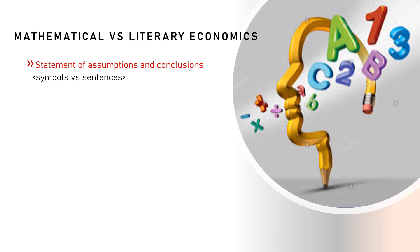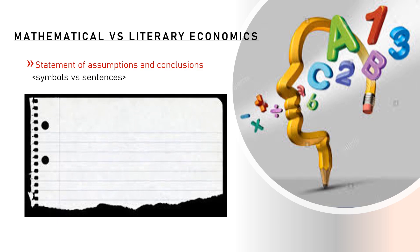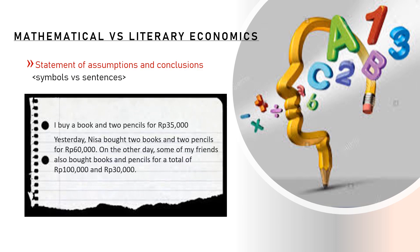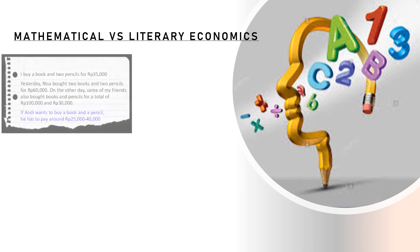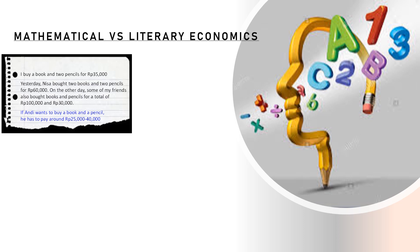Well, they differ in the three keywords I just mentioned before. Both assumptions and conclusions in mathematical economics are stated in symbols rather than sentences. Look at this simple illustration. There are information about my purchase and Tess's purchase on books and pencils. Literally, the information can be stated just like that. Moreover, the conclusion can be stated likewise through literary logic and using words, although it is likely less accurate.